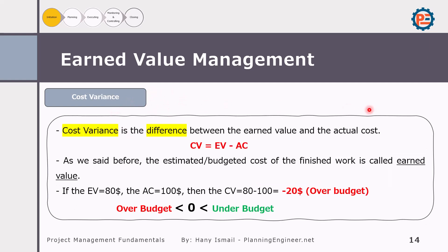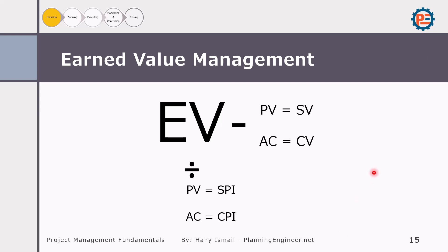Cost Variance is the difference between the earned value and the actual cost. It indicates whether the project is over or under budget. A negative amount means we are over budget, which is not good — we always want to be under budget. If it is positive, we are under budget. If you can memorize this formula card, you can know all the EVM terms. We have: Earned Value minus Planned Value gives Schedule Variance; Earned Value minus Actual Cost gives Cost Variance; and so on. Pause the video and try to write and memorize these formulas.